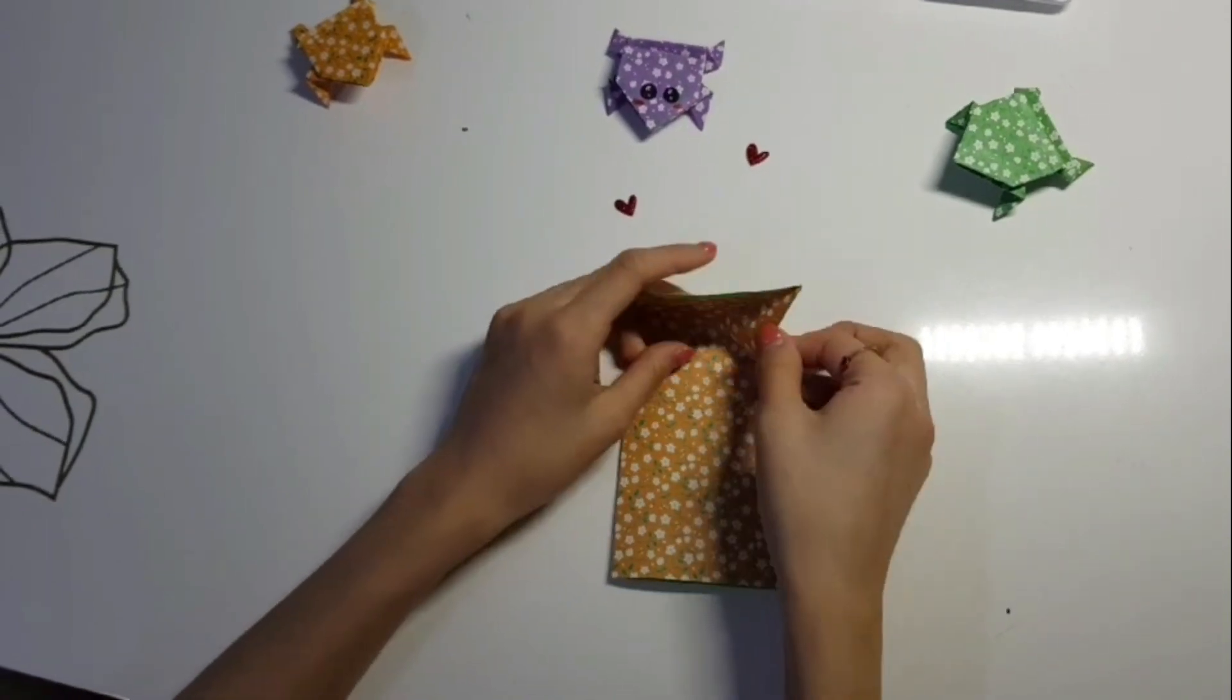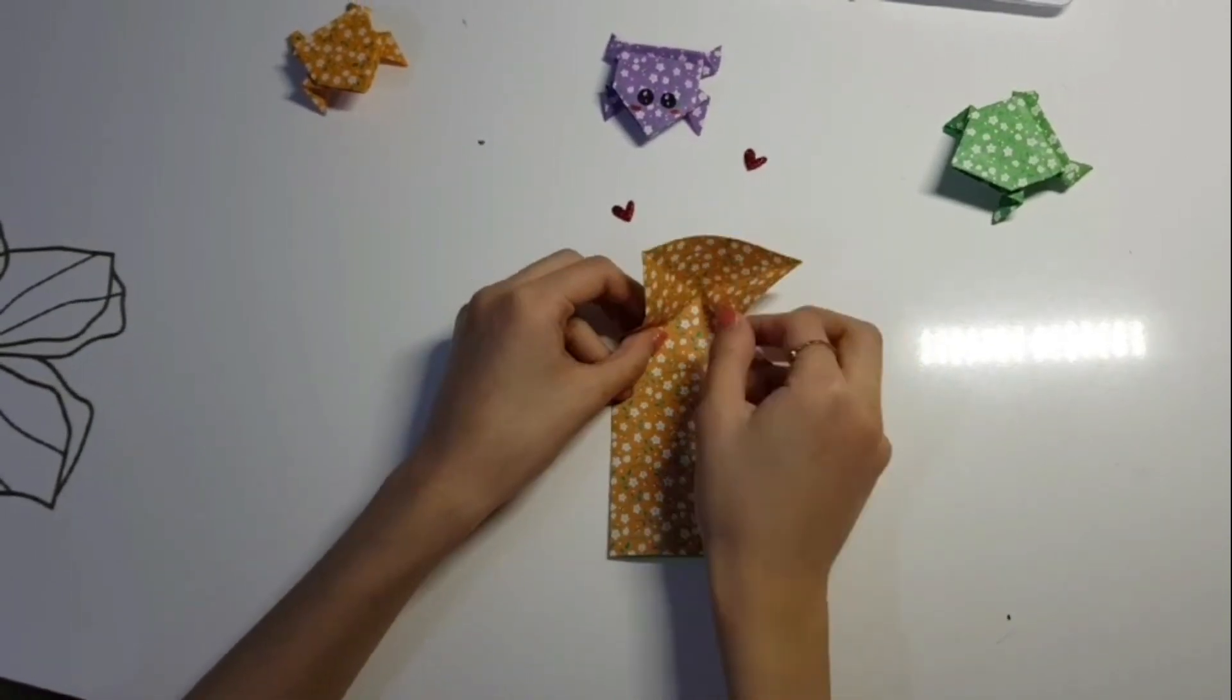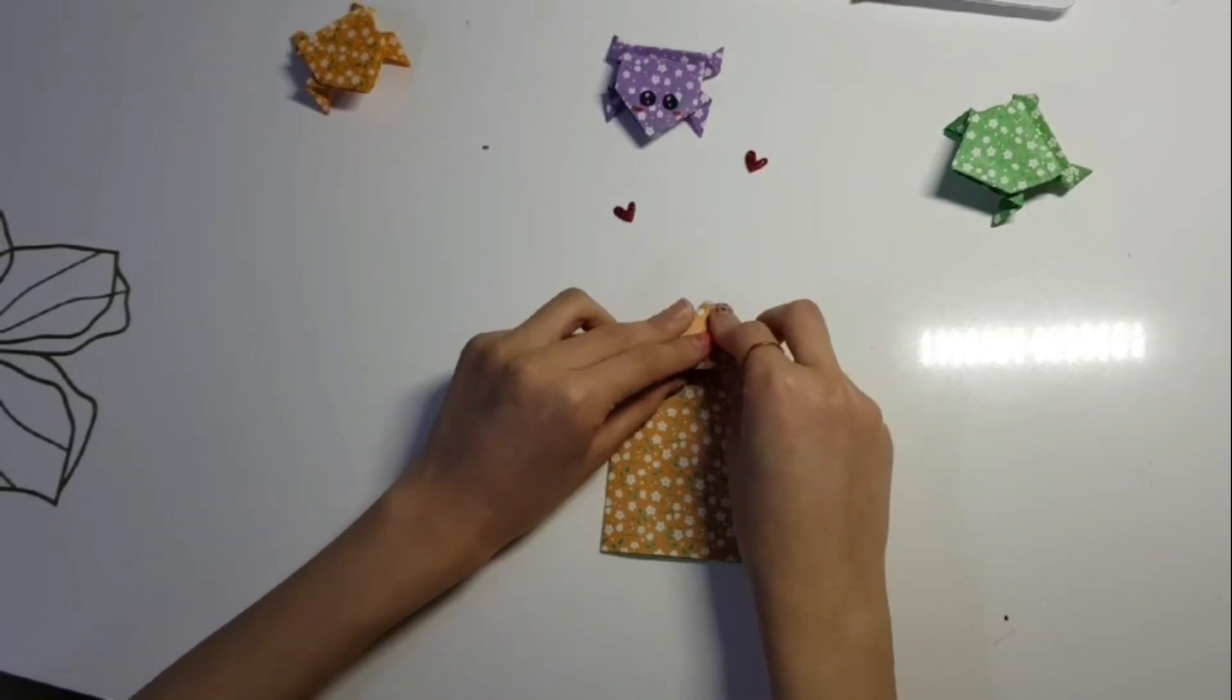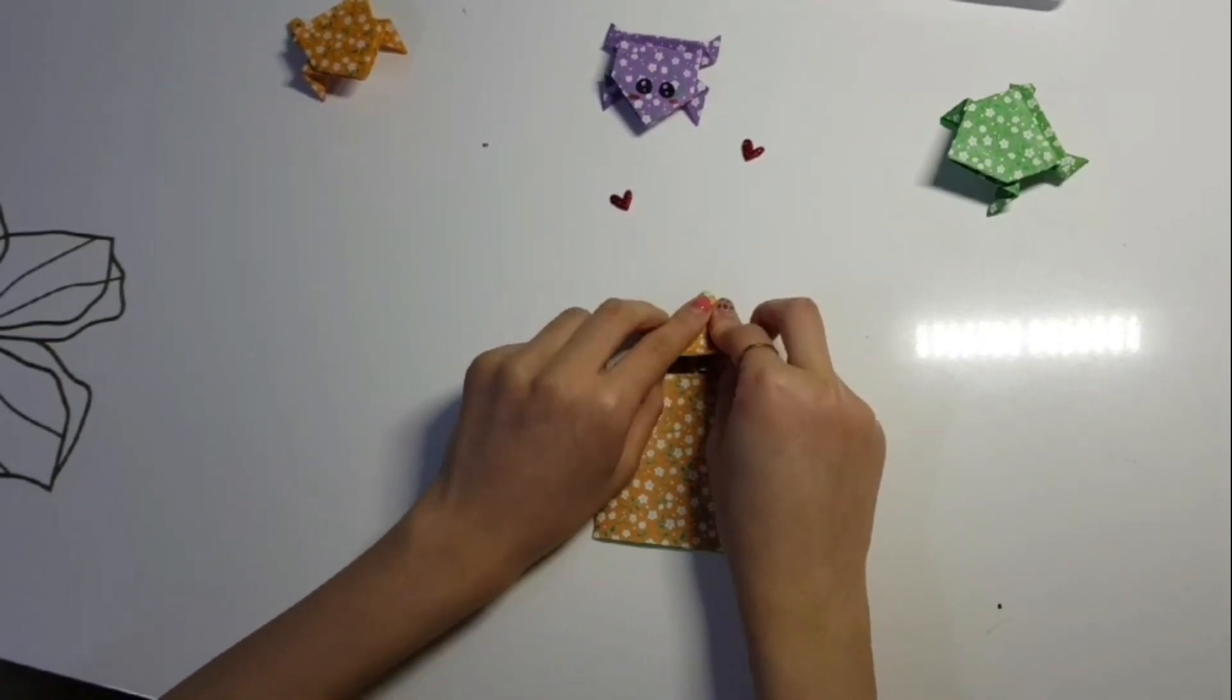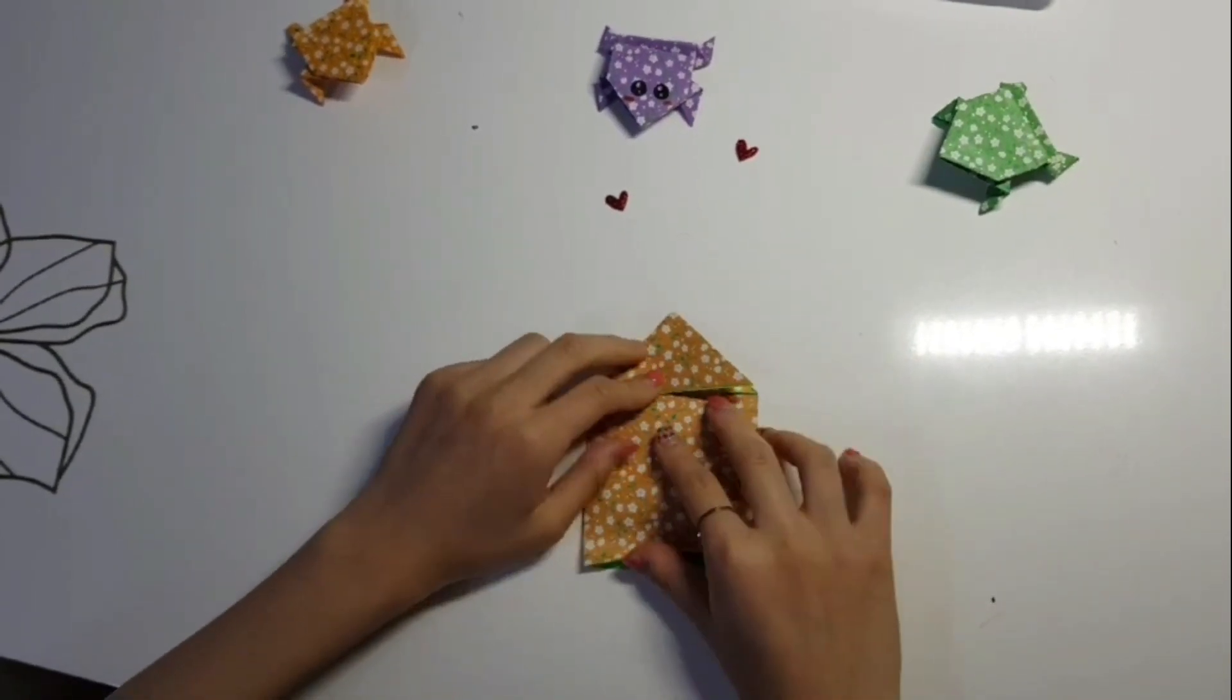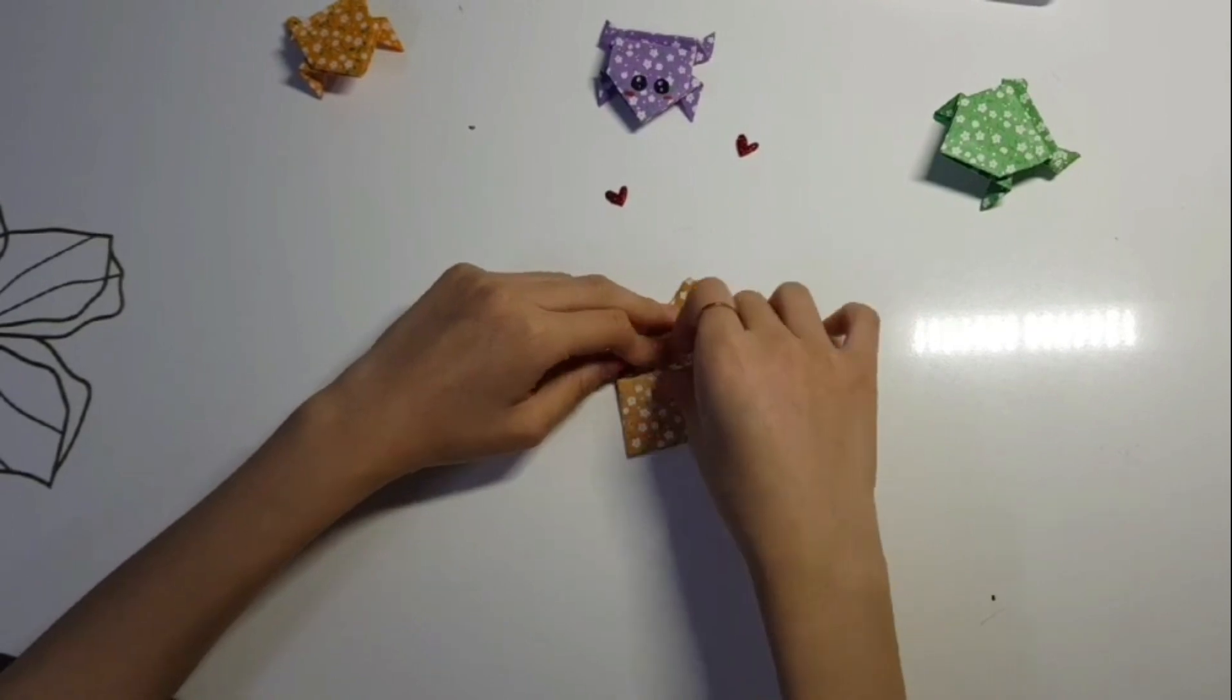After, you open it up and you should have a triangle shape. Next, we need to make it so that it kind of collapses by folding the creases first and then the section. Make everything come into the center to make a triangle shape.